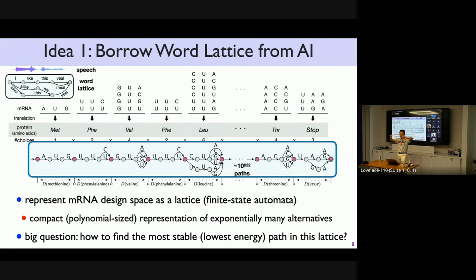For example, most of the time, it's only the third letter that has a choice, that has ambiguity. You stitch all the individual mRNA lattices or DFAs together. You've got a very thin, but very long mRNA lattice. And that lattice or DFA contains 10 to the 600 something paths. Each beginning to the end path represents a valid COVID vaccine sequence. But that does not solve the problem, because you just change the representation. The real question is, how do you find the most stable path?